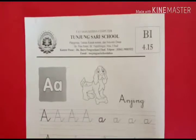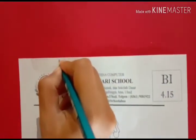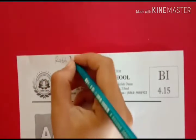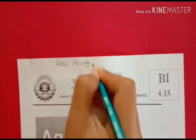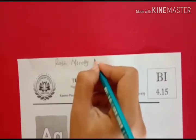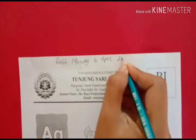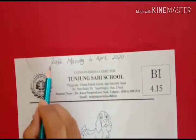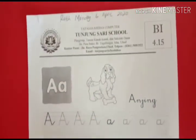Alright, let's start! Before you begin your worksheet, let's fill in your name first. After your name, write the day — what day is it today? Then write the date — the date is the sixth, the month is April 2020. Don't forget capital letters for your name, the month, the day, and the year.